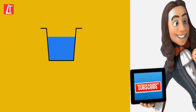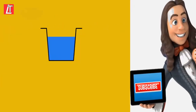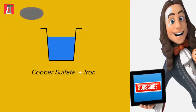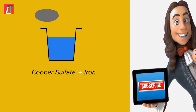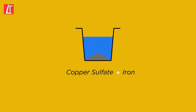For example, if you put iron powder in a blue copper sulphate solution, quite quickly you observe a red powder appear — the copper — and a pale green solution of iron sulphate forms.